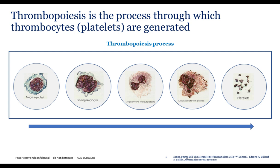Platelets, or thrombocytes, are anucleoid discoid cells formed by the cytoplasmic fragmentation of bone marrow megakaryocytes. Megakaryocytes are the end maturational stage of a sequence which starts with the differentiation of a pluripotential stem cell, a process mediated principally by the glycoprotein hormone thrombopoietin (TPO). The pluripotential cells differentiate to become morphologically and immunologically distinct cells committed to a platelet lineage, through the stages of megakaryoblast, pro-megakaryocyte, and megakaryocyte.